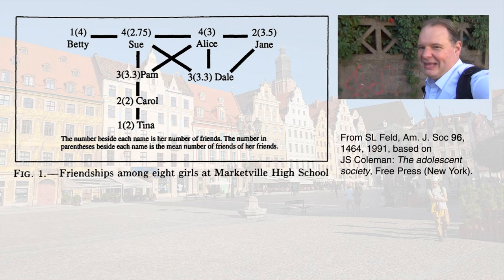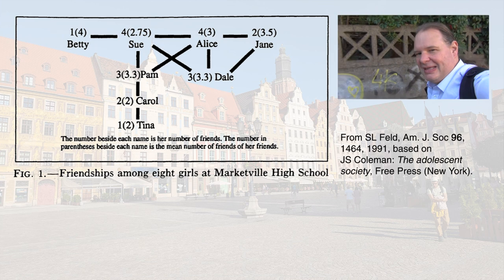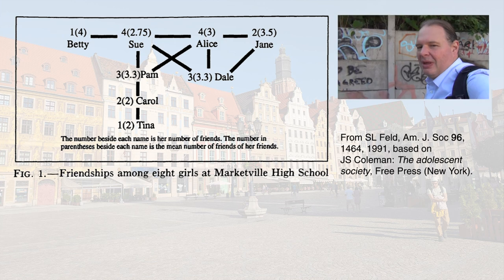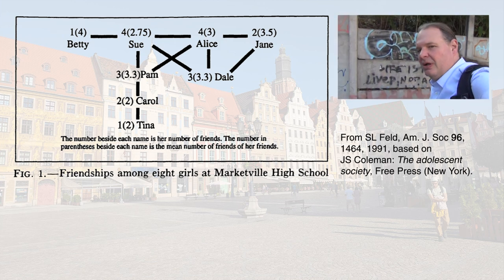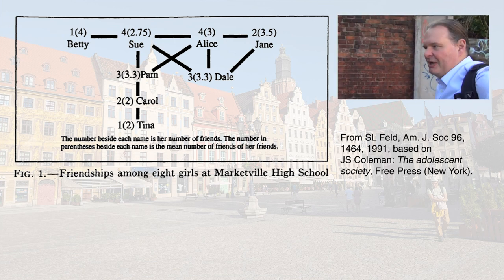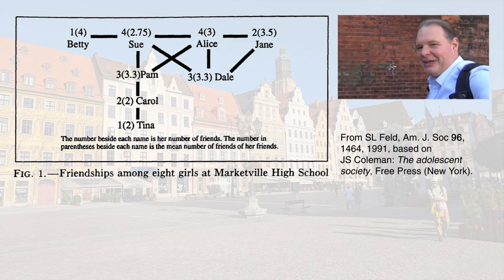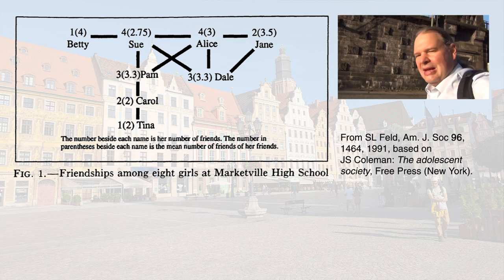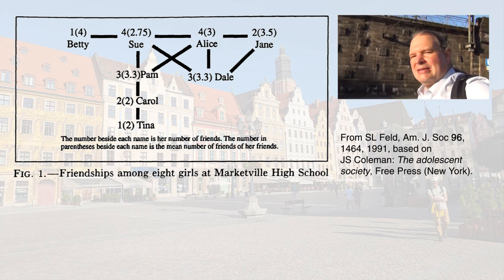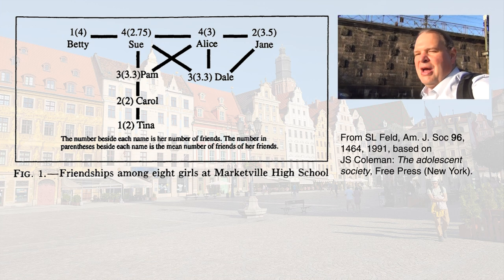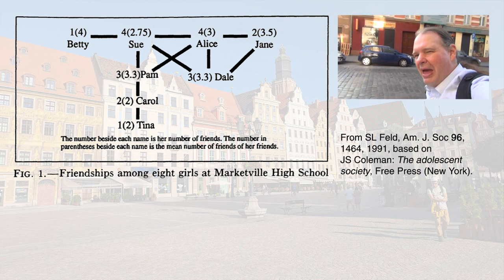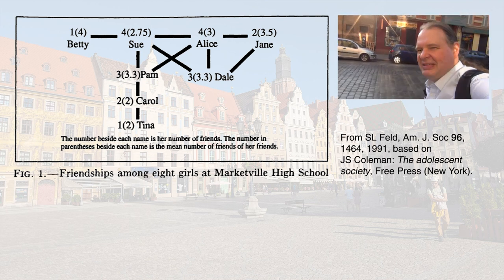So maybe we should look at a more realistic example. This here is one component from a network known as the Marketville Girls — a famous historical example showing friendship links between a group of high school students from the early 20th century. The numbers next to the names indicate the number of friends these girls have, and the number in brackets is the average number of friends their friends have. Again, we can see that most girls have less friends than their friends have on average.